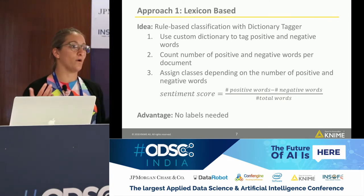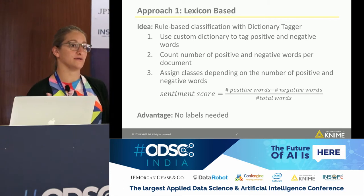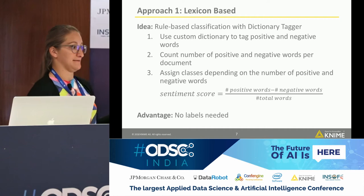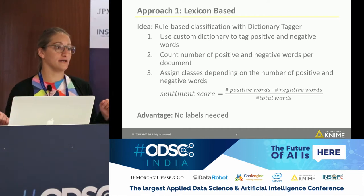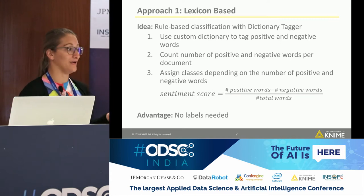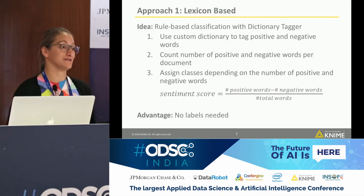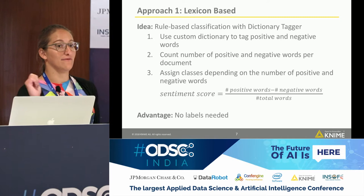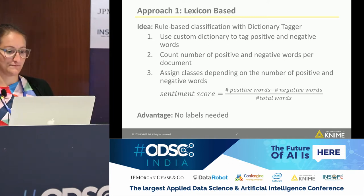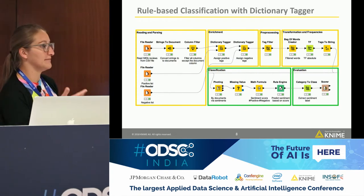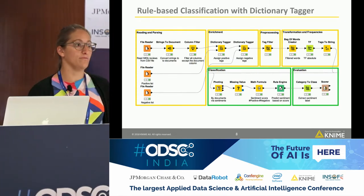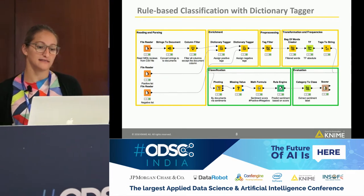This approach has one big advantage over the other approaches: you don't need a labeled dataset. For all the machine learning and deep learning approaches, you apply supervised learning and therefore need a labeled dataset — someone has to sit down and label thousands of reviews before you can start.